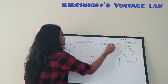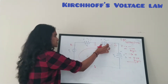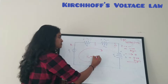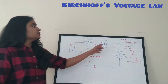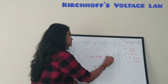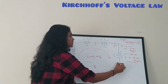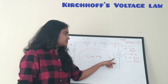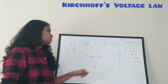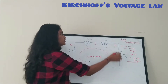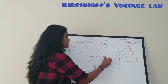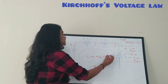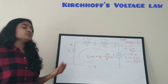Traveling from C to D, there is another voltage V2 across element Z2. Again I am traveling from positive to negative, so the voltage is minus V2. Then from D back to A, there is only Z3, and the voltage across Z3 is V3. Since I am again traveling from positive to negative, the voltage is minus V3.